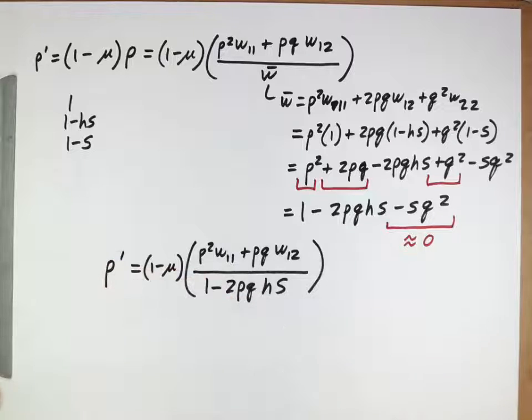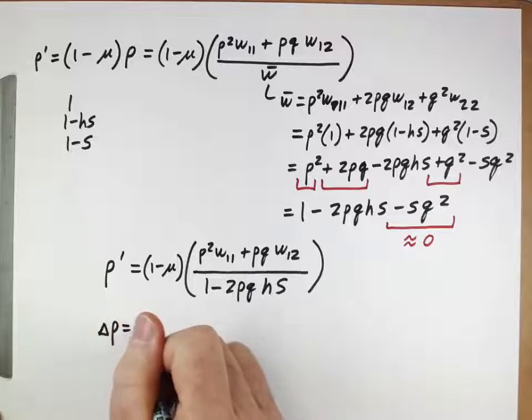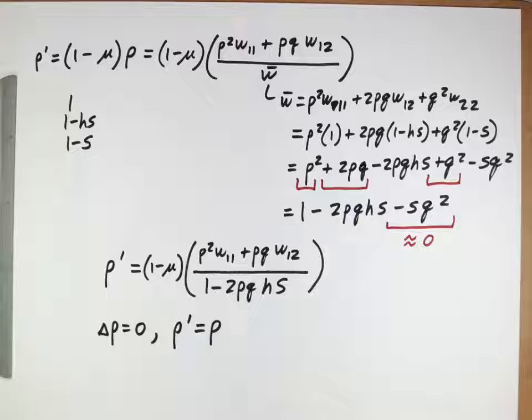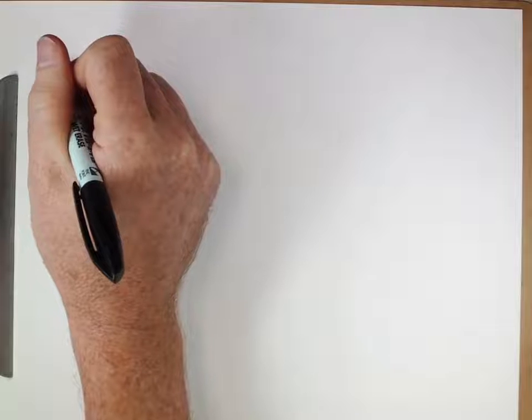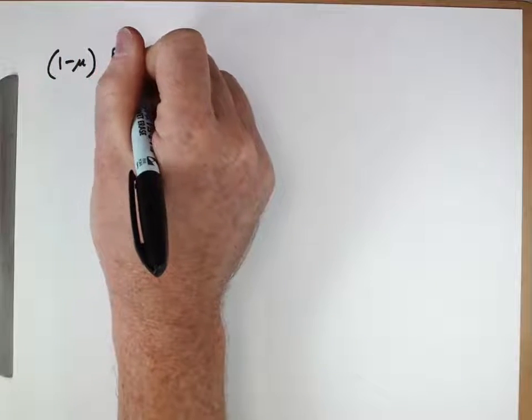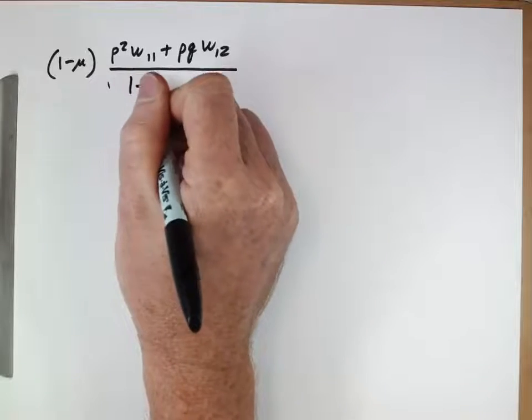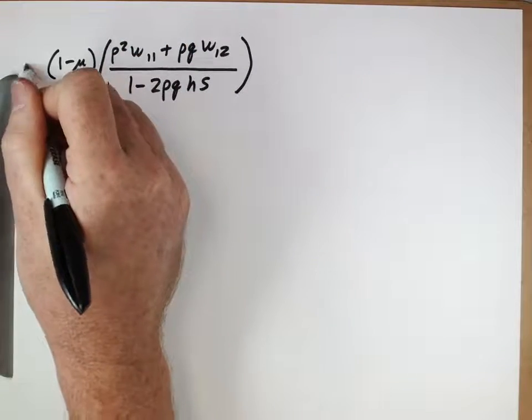That's what we'll substitute up into here. And this was all equal to p prime. So the thing we're interested in here, if this is p prime, we want to solve for equilibrium conditions. And so at equilibrium, that would be Δp is equal to 0. Another way of thinking about that is that p prime would be equal to p. So one way to figure out what that mutation-selection balance would be is when this equation here ends up being equal to p. So we should set those equal to each other and solve for those conditions and see what we get.